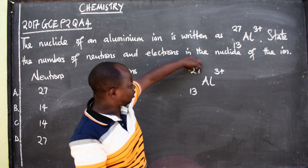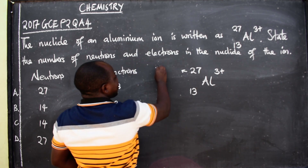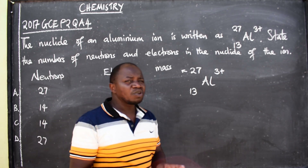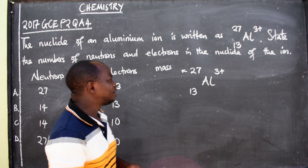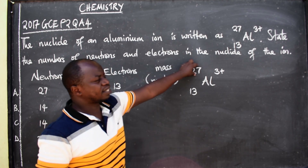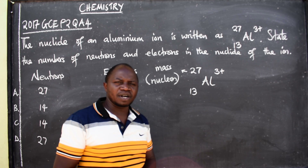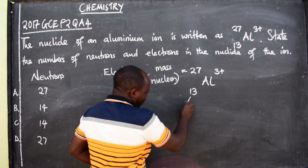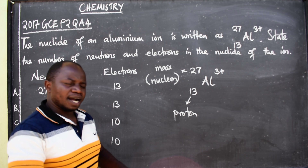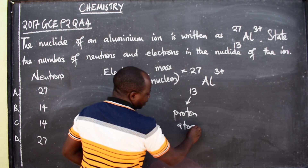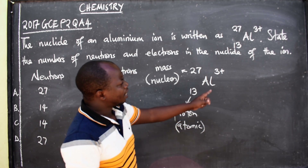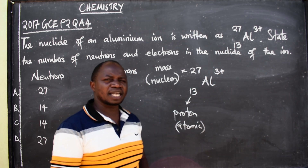The top number in the nuclide notation is called the mass number, also known as the nuclear number, of aluminium. The bottom number is called the proton number, which can also be called the atomic number. The three-plus sign you see here indicates the charge for this aluminium ion.